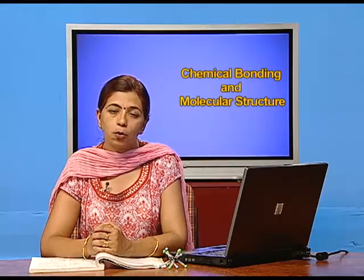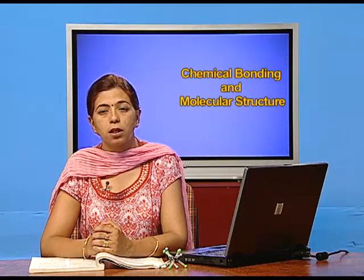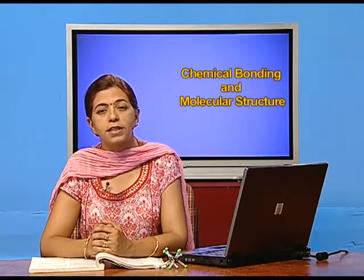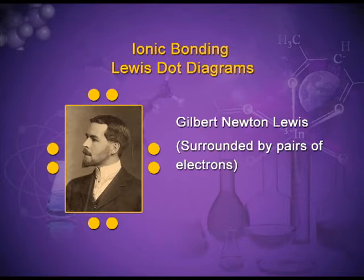Cassel and Lewis studied the nature of noble gases and concluded that noble gases do not undergo chemical combination because of their complete octet. They also inferred that only the valence electrons play a role in the formation of chemical bonding; inner electrons do not participate. Lewis gave Lewis dot formulas — Lewis symbols — in which he represented valence electrons through dots, which is why they are known as Lewis dot structures or Lewis dot symbols.